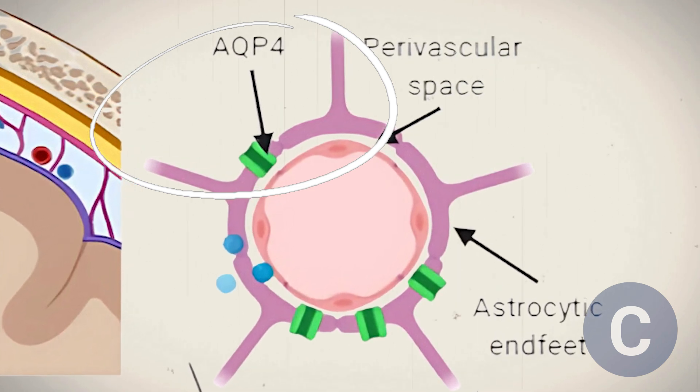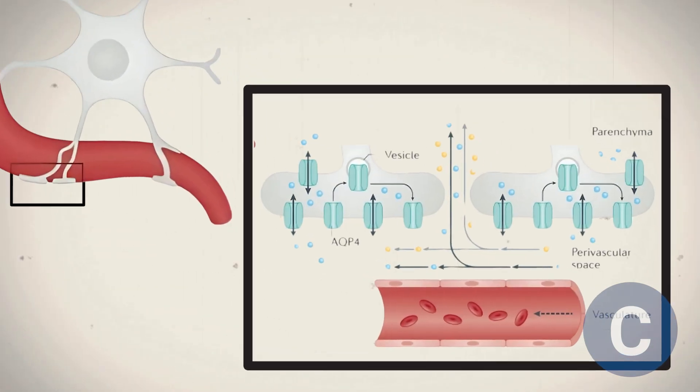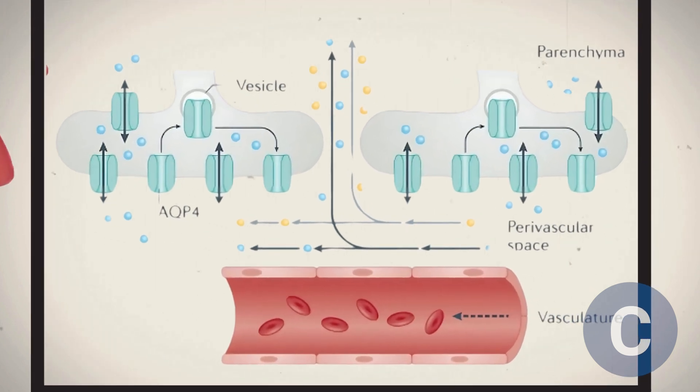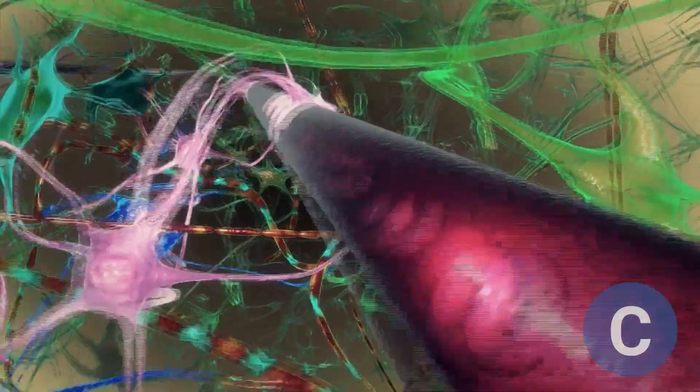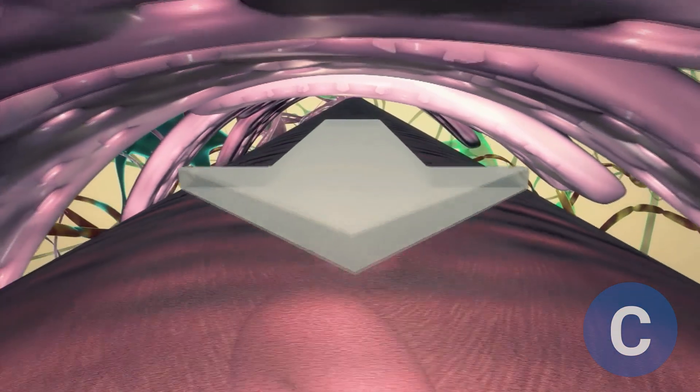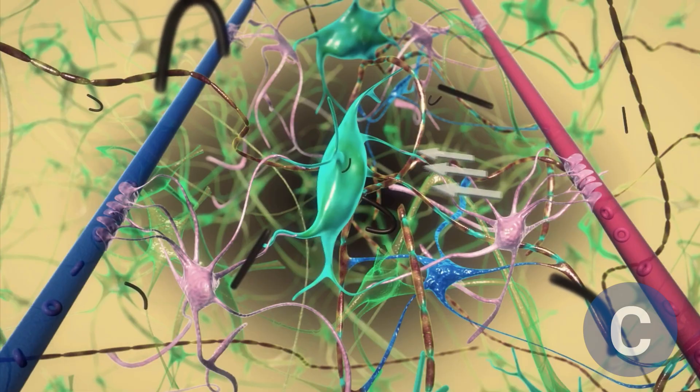Aquaporin-4 is a protein located on brain cells called astrocytes. Astrocytes have extensions, known as end feet, that form a kind of sheath around cerebral blood vessels, forming part of the blood-brain barrier. In other words, the idea is that aquaporin-4, due to its location around blood vessels, plays a key role in facilitating the flow of cerebrospinal fluid from the arterioles to the veins.